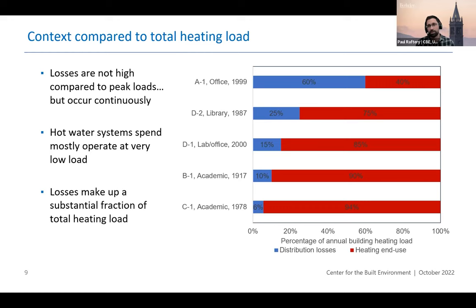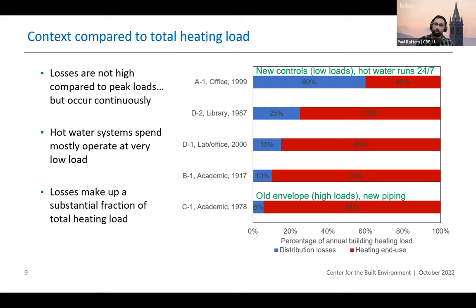For five of these buildings we have annual data from the instrumentation, and the losses range from somewhere between 6% in one building to 60% in another. That variation is due to some buildings having very high heating loads — like a really old envelope, single pane windows — whereas others have newer construction, better insulation, and also some of the controls and strategies in place.